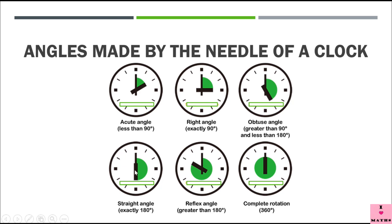Now in this clock, we can see that the time is 6 o'clock. So the angle formed by the two needles is exactly 180 degrees and is called a straight angle. Now in this clock, the time is 10 o'clock and the angle formed — the one in the green color — is more than 180 degrees and less than 360 degrees, and this is a reflex angle.